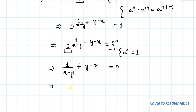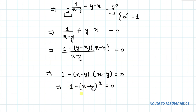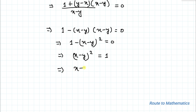Taking LCM on the left-hand side with (x minus y) as denominator, we get 1 plus (y minus x)(x minus y) equals 0. This simplifies to 1 minus (x minus y) squared equals 0, which implies (x minus y) squared equals 1, and therefore x minus y equals plus or minus 1.